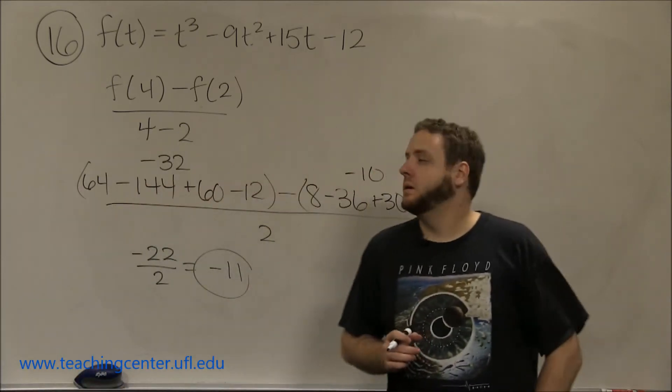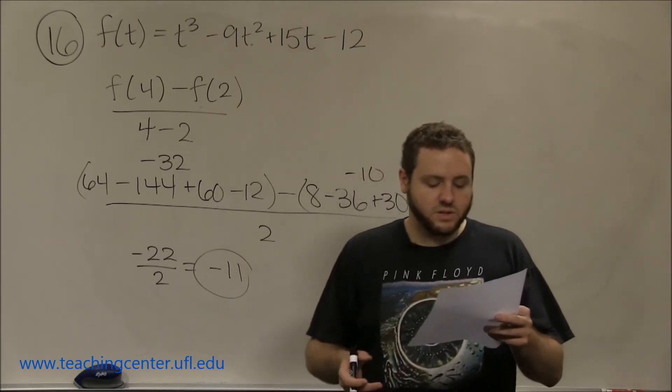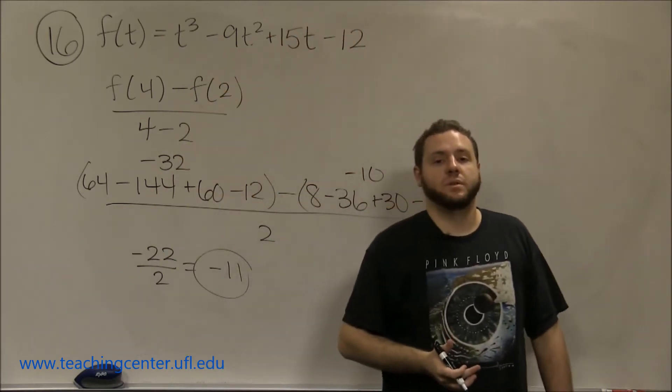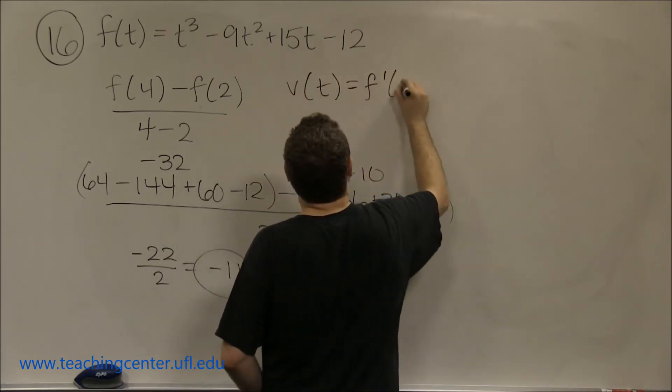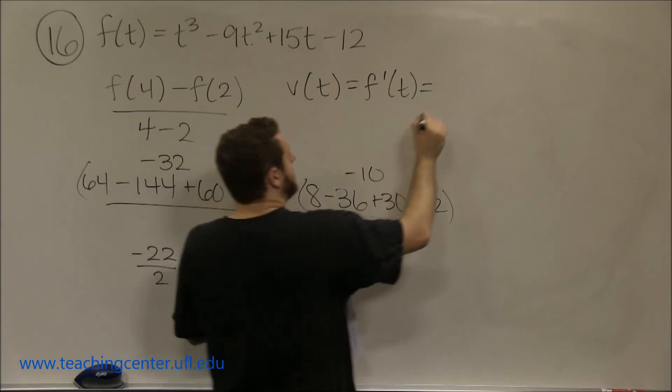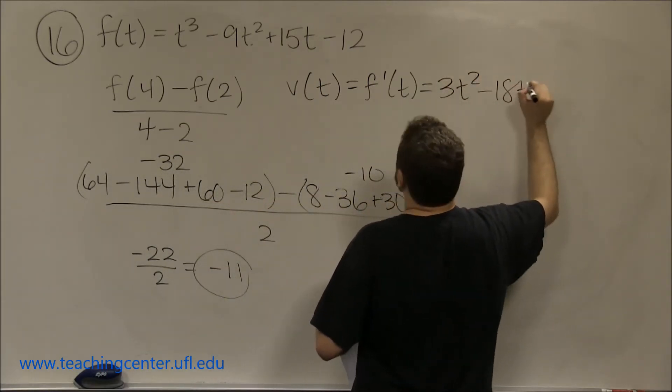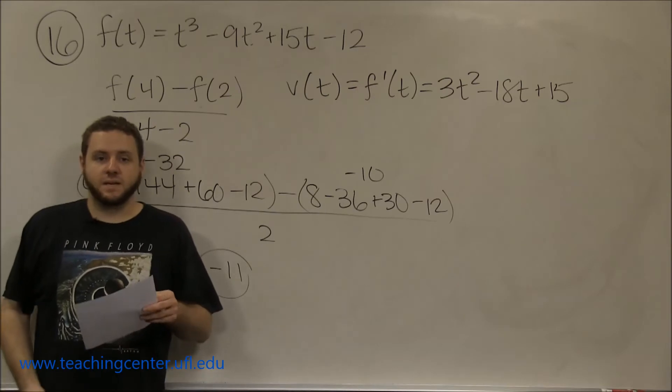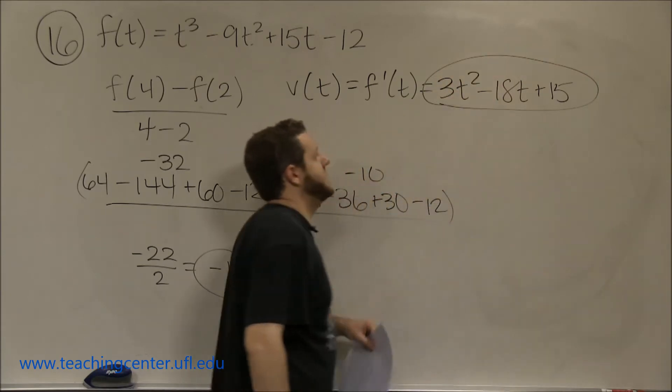Part b is now a symbolic question instead of something we're plugging in: find a function for the velocity. Well, if this function gives us the position, the function for velocity is always just the derivative of that. So v(t), our velocity function, is f'(t), the derivative of our position. The derivative here would be 3t² - 18t + 15. That's our velocity function v(t).